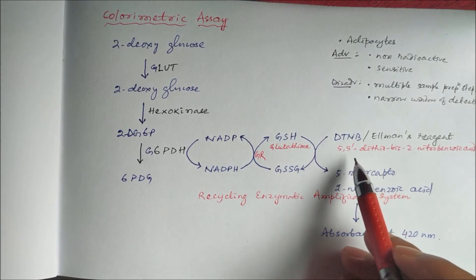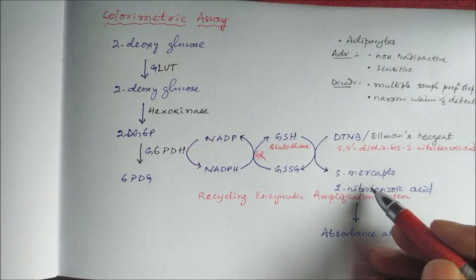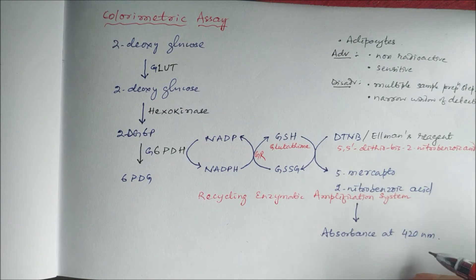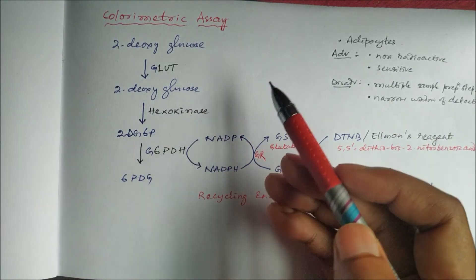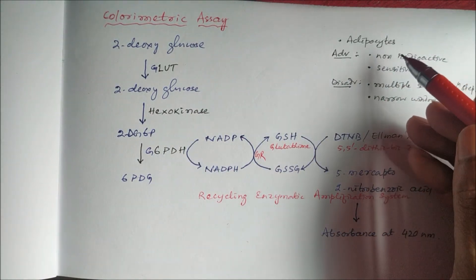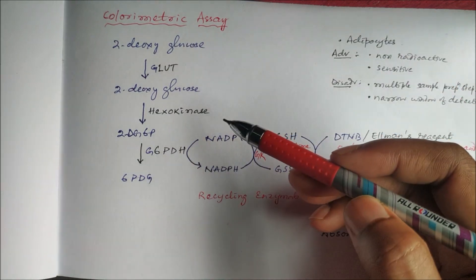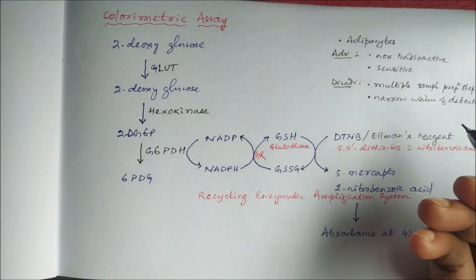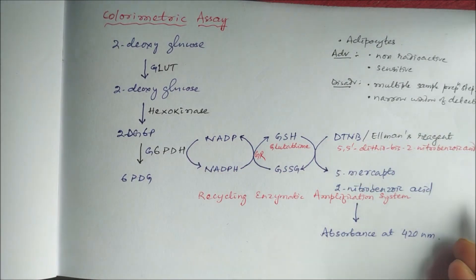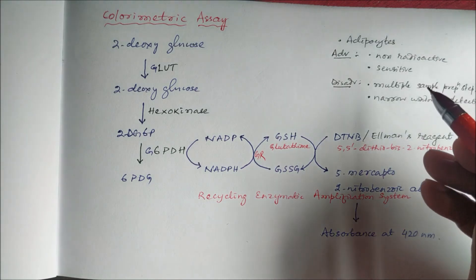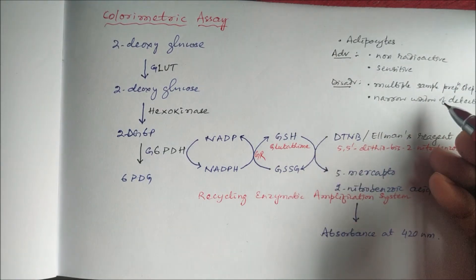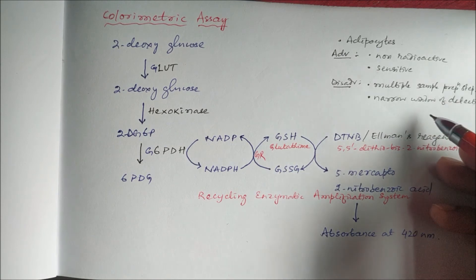When NADPH is recycled back to NADP, glutathione reductase is used, leading to formation of glutathione. This glutathione, in the presence of Ellman's reagent — 5,5'-dithiobis(2-nitrobenzoic acid), or DTNB — is converted to 5-mercapto-2-nitrobenzoic acid, and absorbance is measured at 420 nanometers. This method is sensitive and can detect very low amounts of 2-deoxyglucose-6-phosphate, and it is non-radioactive. The disadvantage is that it requires multiple sample preparation steps and has a narrow window of detection.